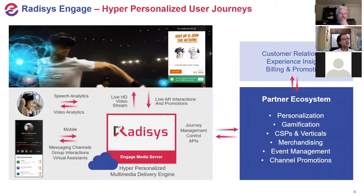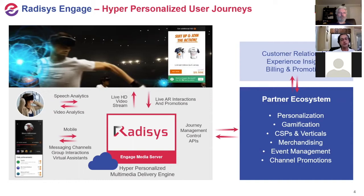Looking more specifically at the role of the Radisys Engage Media Server — it's involved in the front-end delivery of multimedia content to the end user as part of the gamification journey that user is subscribed to. This means delivering live or pre-recorded HD content. Someone may be participating in a sporting event, a concert, or a marketing campaign — delivering real-time media over a VR headset, a tablet, or multiple devices over multiple networks with various encoding formats and bandwidth considerations.